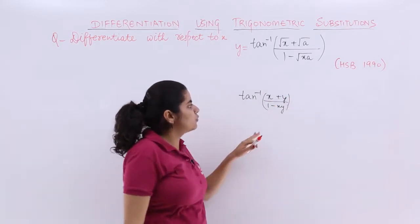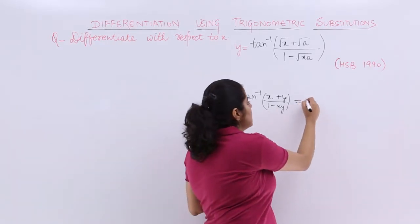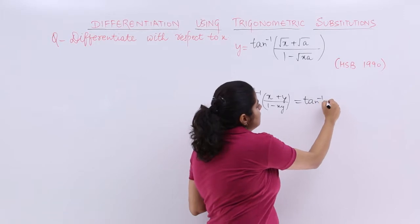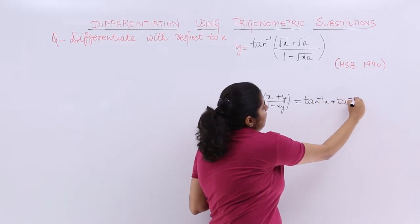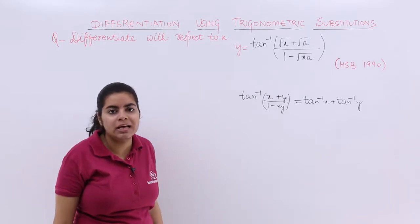I know most of you might be remembering this formula: tan inverse (x+y)/(1-xy) equals tan inverse x plus tan inverse y. Let's use this formula for the solution and the question becomes as simple as that.